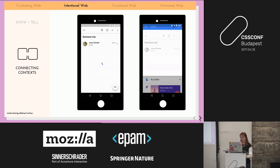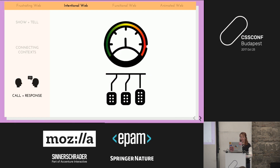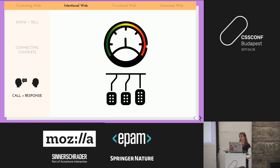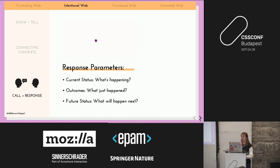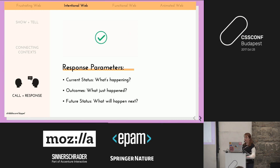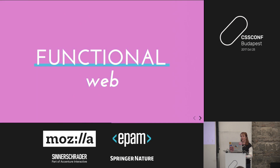The last strategy is call and response. Think about driving a car: you accelerate and the car goes faster, you brake and it slows. But imagine if you never had an odometer — you'd press the pedal and not know if it's going to stop or accelerate. Animation can provide that same feedback: when someone submits a form, you can let them know the current status, the outcome, and what the future status is. Using these strategies, we can start to make a more functional web.